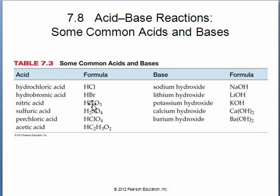These first five acids that are listed here are known as strong acids, and I'll go into that definition in a little bit. And this very last one is not a strong acid, but it's a common acid. It's acetic acid, and it is the acid that is found in vinegar.